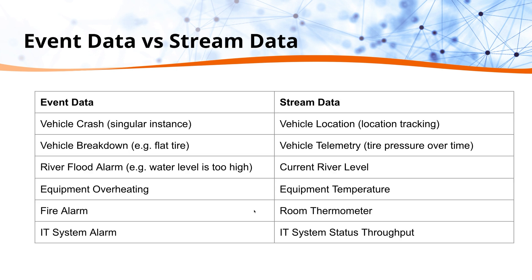Here's a comparison between event data and stream data. For event data, take the river flood example. If you have a river, you may have a sensor high up on the river bank — perhaps a buoyancy sensor — that detects when the river reaches a certain level. When it does, a message is sent into the infrastructure to warn that the water has reached a dangerous level. That trigger, that event, only happens once.